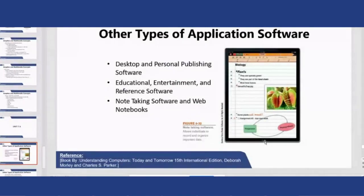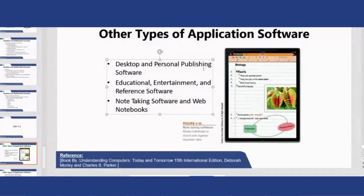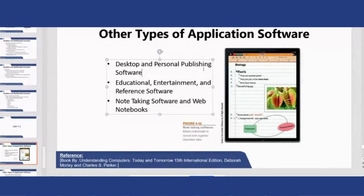Here we are talking about personal publishing software, which is an idea of publishing software you will have used before. We often think that our document is printed from a professional printer, but actually you can edit it on publishing software so that you can create attractive documents. You can manipulate different text, images, and you can manipulate the different look and feel, so that it looks like it came from a professional printer, when you are actually printing it from a normal printer.